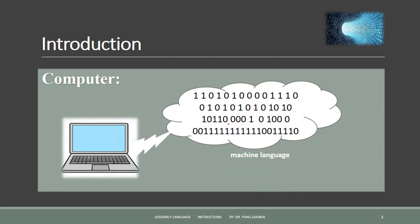All data in a computer system consists of binary information. Binary means there are only two possible values: zero and one.